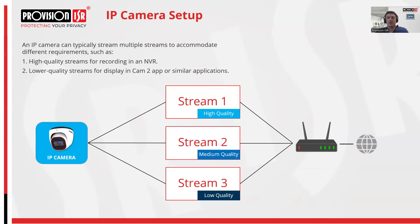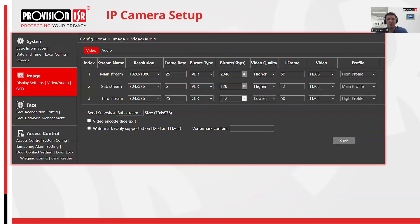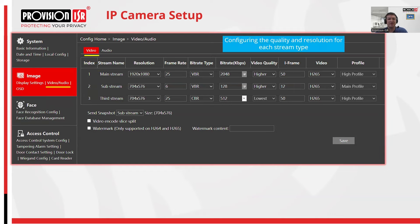Each camera, when transmitting over the network, can broadcast in multiple streams, each offering varying qualities of video. High-quality streams are typically used for NVR recording to ensure clear and detailed footage. Additional streams are optimized for applications like remote viewing or management software, providing flexibility in how the video is accessed and utilized. We can set the qualities of each stream in the video window. For instance, we can configure the display at high resolution, while the secondary stream can be set to appear at a much lower resolution.